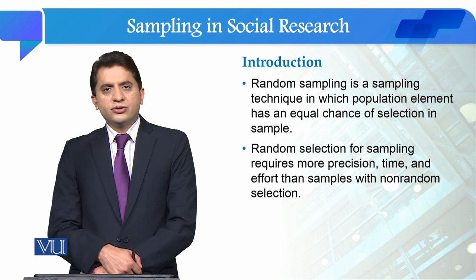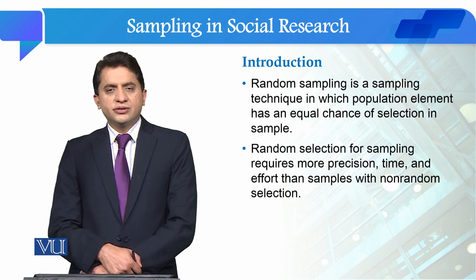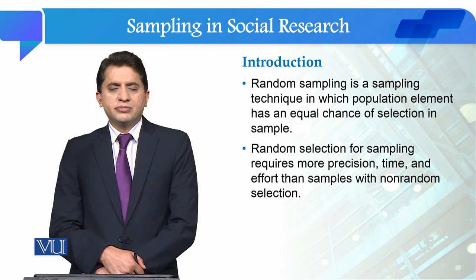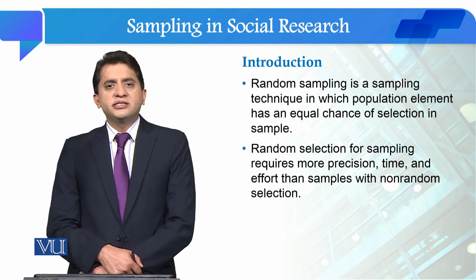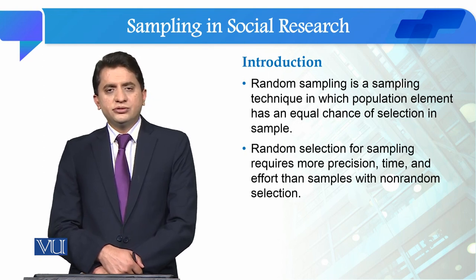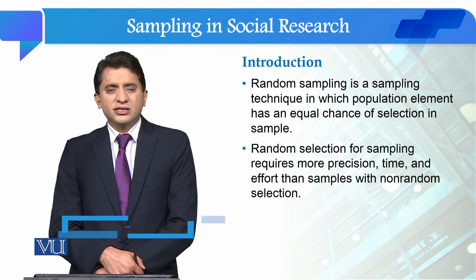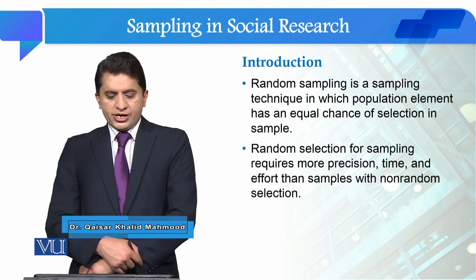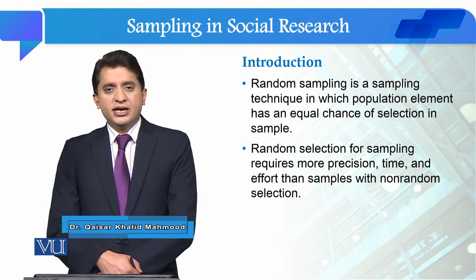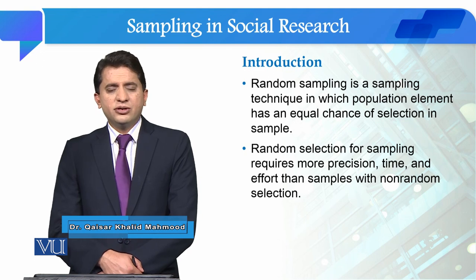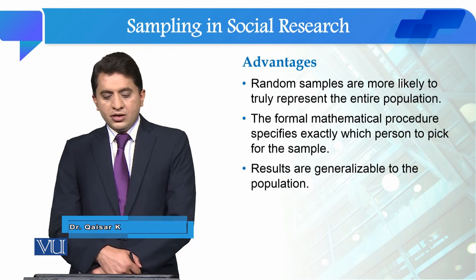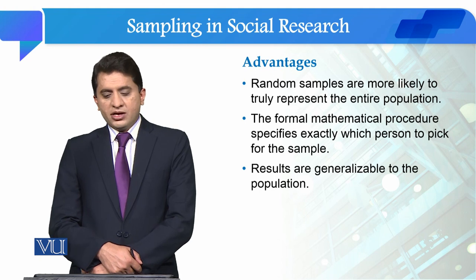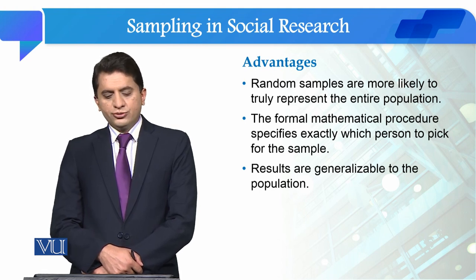Random selection for sampling requires more precision, time, and effort than sampling with non-random selection. The randomization process in probability sampling requires greater precision, more time, and more effort as compared to non-random sampling.